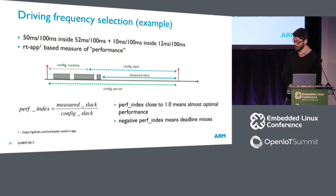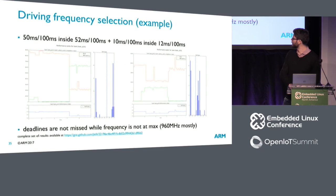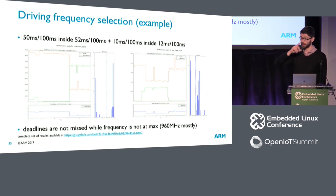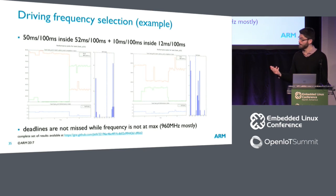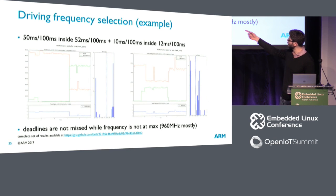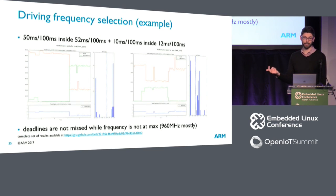Some frequency-scaling results: the basic idea — which you can look at in more detail offline — is that with a simple example, you are meeting both tasks' deadline requirements while not running at the maximum frequency. The red line not going below zero while running below max frequency is the trade-off you want to achieve, and it seems to be working.